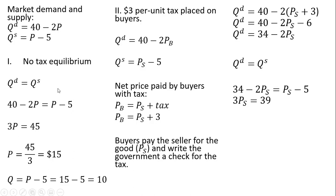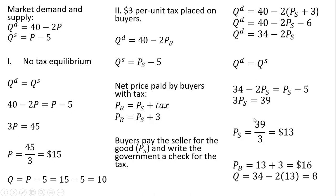Now we're going to set both equations equal to one another — quantity demanded equal to quantity supplied — and divide through by 3. We solve for the price that sellers receive: it's $13. The price that buyers pay is this $13 plus the $3 check that buyers pay to the government, so buyers are net out-of-pocket $16 per unit. To get the equilibrium quantity, we plug $13 into the supply equation and get 8 units.